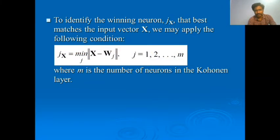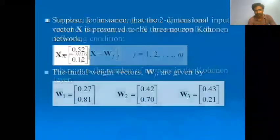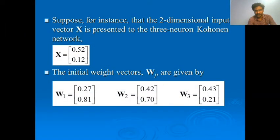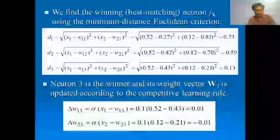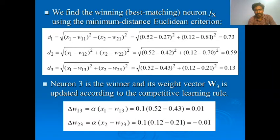To identify the winning neuron, the best match with the input vector x is found using: j(x) = min_j |x − w_j|. Suppose we have a two-dimensional input vector x presented to a three-neuron Kohonen network. Given the input values and weights, we calculate the Euclidean distance for each neuron. Neuron 3 is found to be the winner, and its weight vector w3 is updated according to the competitive learning rule.